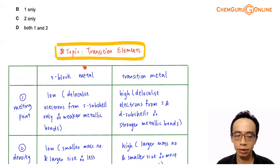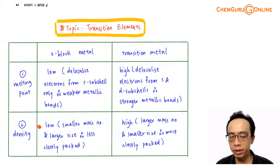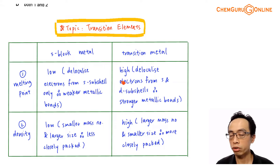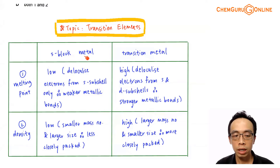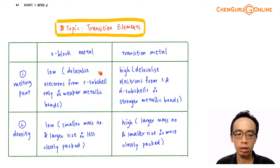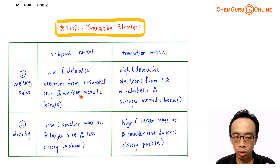Rhenium is just an example. If I'm comparing the melting point and the density between S-block metal and transition metal, the comparison is summarized here. For S-block metal, we expect the melting point to be low. The reason is that S-block metal like calcium can only delocalize electrons from the S-subshell — calcium delocalizes two electrons. This gives a smaller sea of delocalized electrons and a +2 metal cation charge, so the metallic bond is weaker and the melting point is lower.